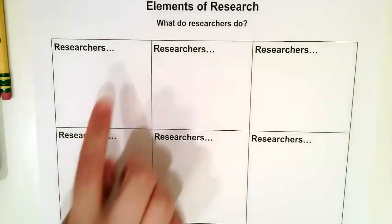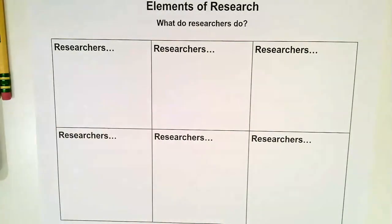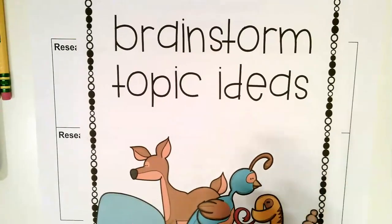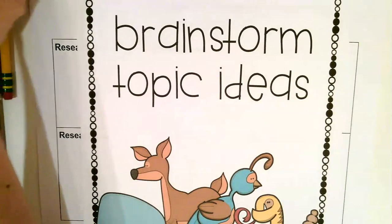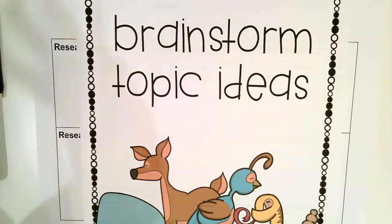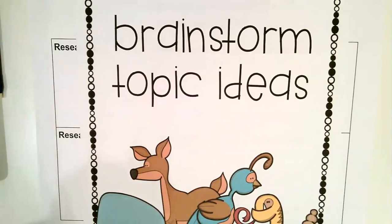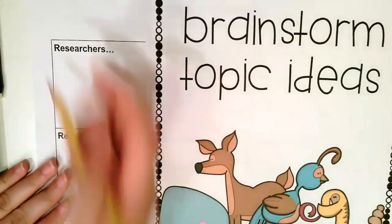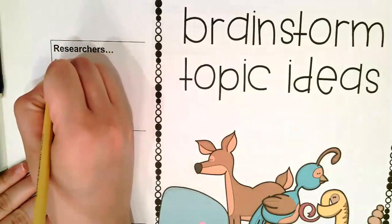The first thing we're going to write in the first box is: researchers brainstorm topic ideas. Before they start writing, just like in any other type of writing, they're going to brainstorm ideas for their topic — brainstorm what they're going to write about and what different things they're going to be looking for. So in the first box, we're going to put 'brainstorm topic ideas.'